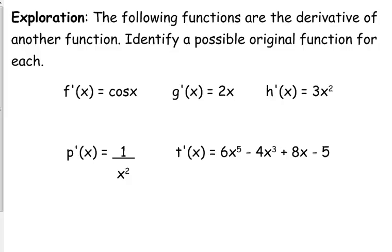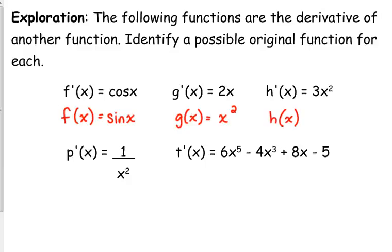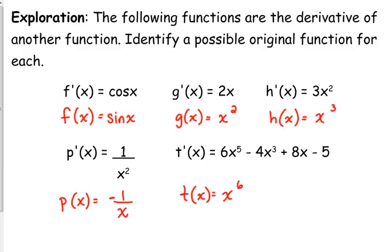I think the first few were pretty straightforward. For the first one, f of x would be sine of x because the derivative of sine is cosine. g of x would be x squared. h of x would be x cubed. And p of x would be x to the 6th minus x to the 4th plus 4x squared minus 5x.